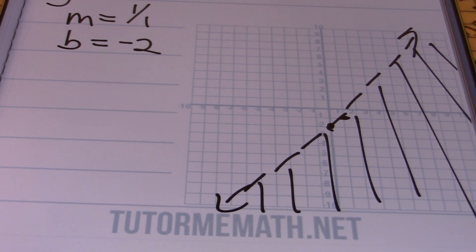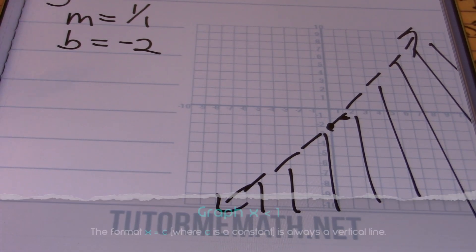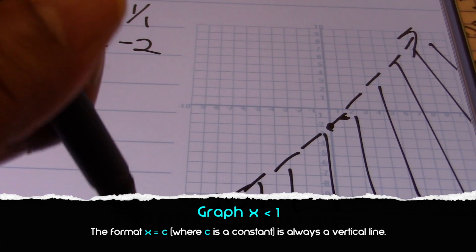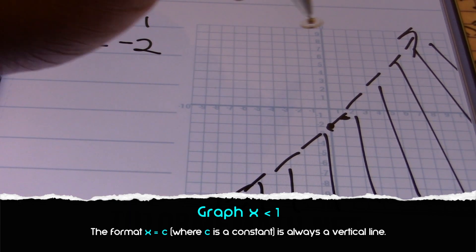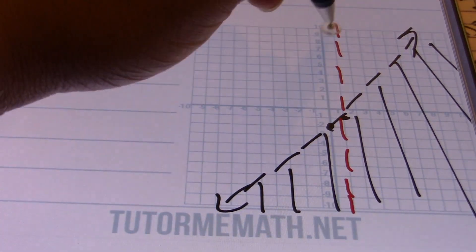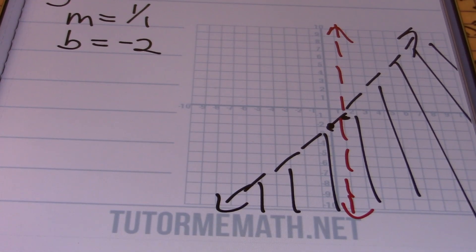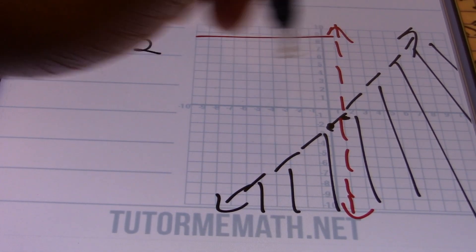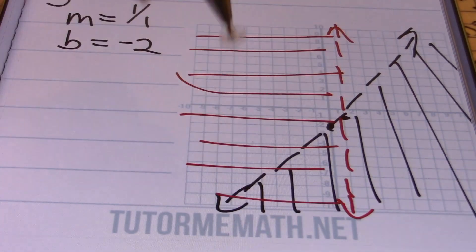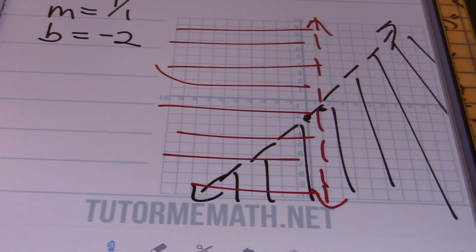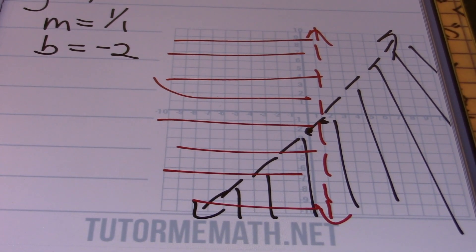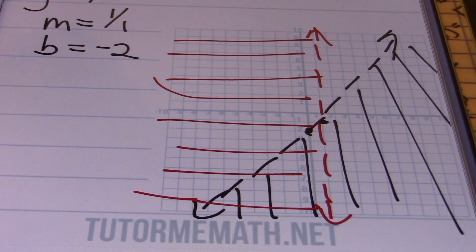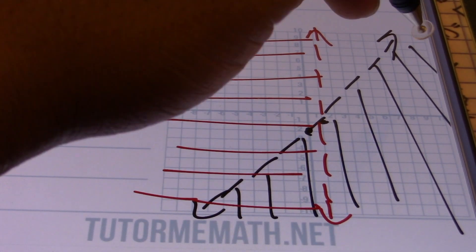I'll also be graphing the vertical line x is less than 1. Because it's a less than symbol, I use a dashed line through 1 with arrows on both ends. Since it's less than, I shade to the left. For a union, everywhere that's shaded is a solution — that is where the union is. The union lies wherever I have it shaded.